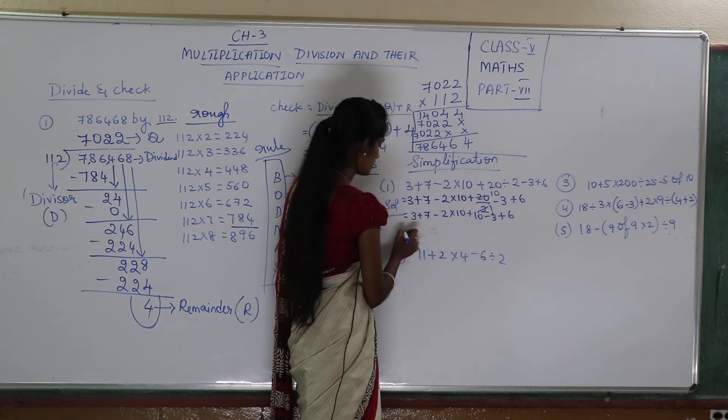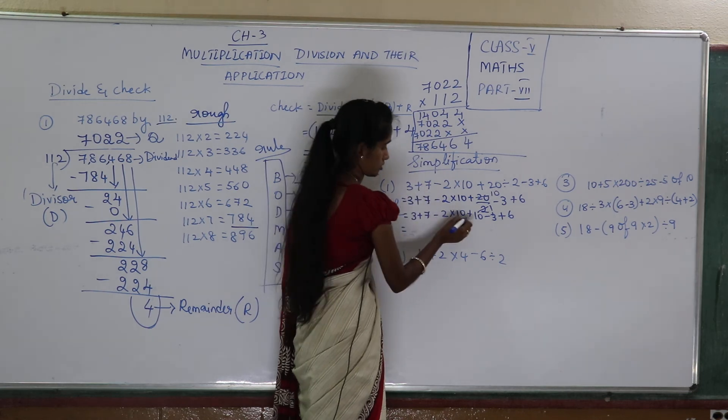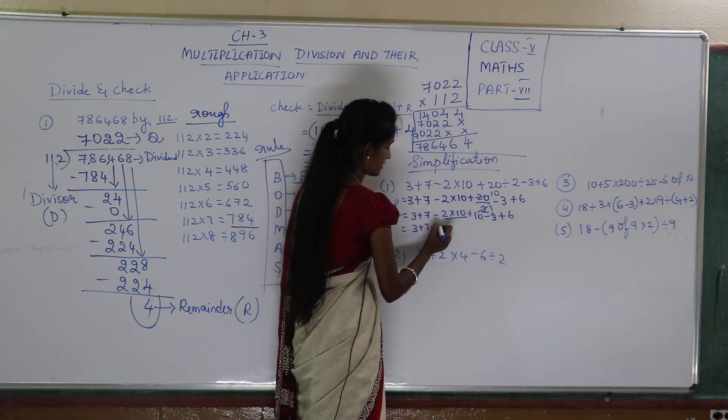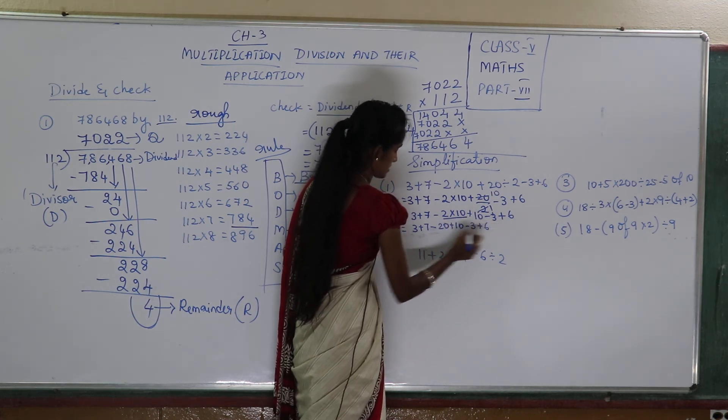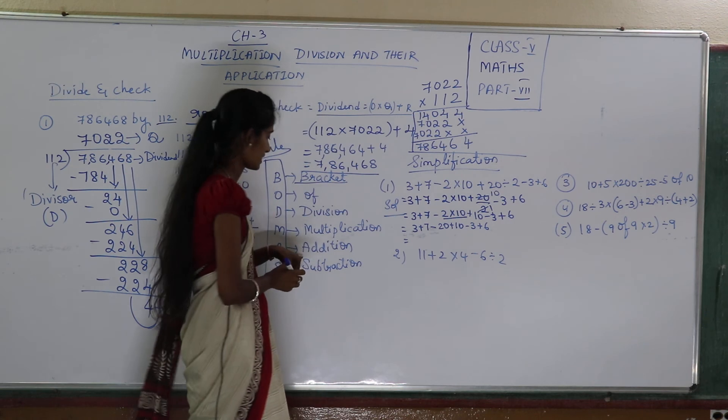Now after division, I will do multiplication. So this is my multiplication. 3 plus 7 minus 20 plus 10 minus 3 plus 6. After multiplication, addition.